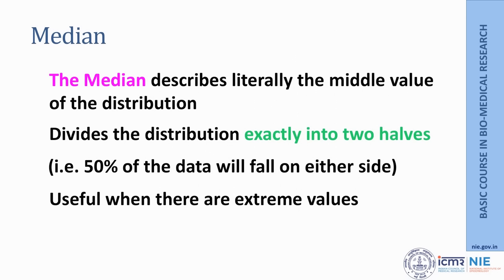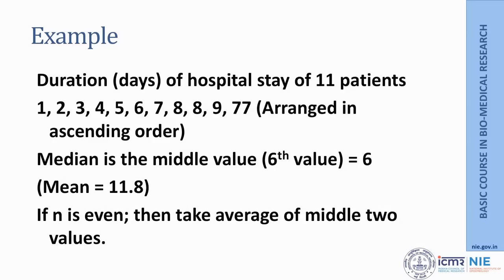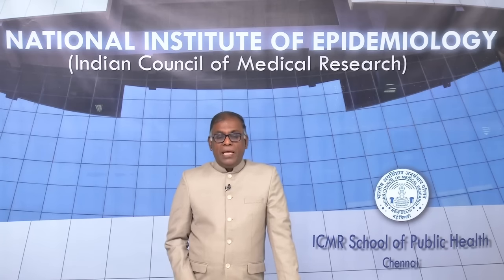The median is literally the middle value of the distribution. It divides the distribution into exactly two halves, so fifty percent of the data falls on either side. This is especially useful when extreme values are present. For example, with data on duration of hospital stay for eleven patients — one through nine days for ten patients and seventy-seven days for the eleventh — the median is the sixth value (n+1)/2 = 6, which is 6 days. The mean in this case is 11.8, so the median of 6 is clearly more appropriate.